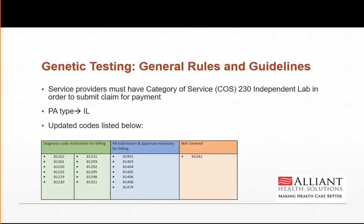Genetic testing is a new authorization type. Providers must have a category of service of 203, or independent lab services, in order to bill for one of these codes. The genetic testing PA type will be IL, and codes are listed here. Codes in green can be submitted for billing with the appropriate diagnosis codes. Codes in blue will require a prior authorization before billing can occur. The code in orange, 81542, is a non-covered code.